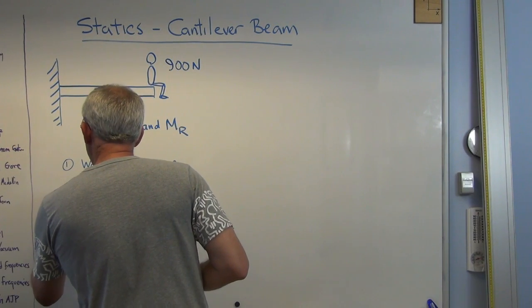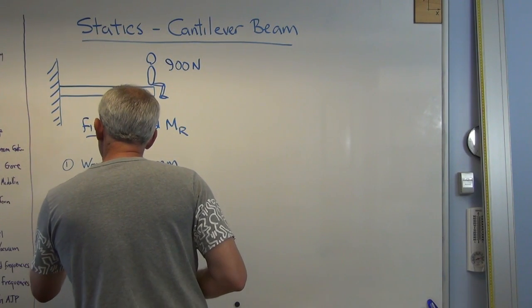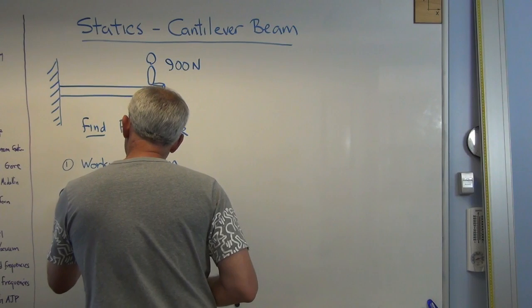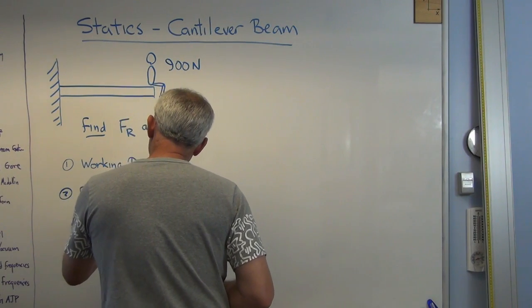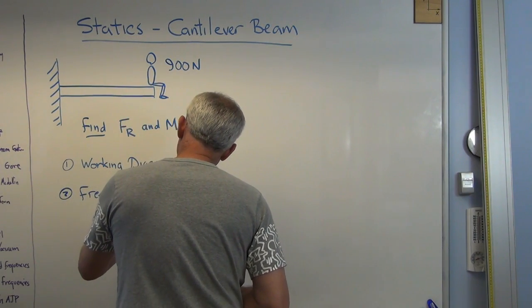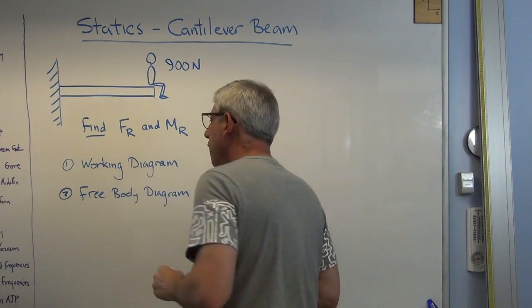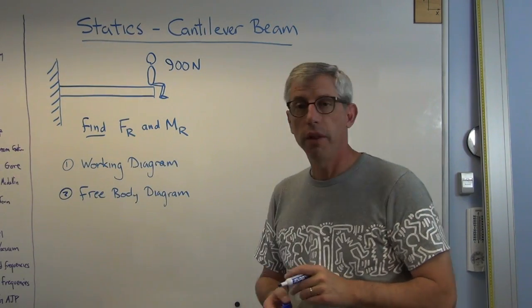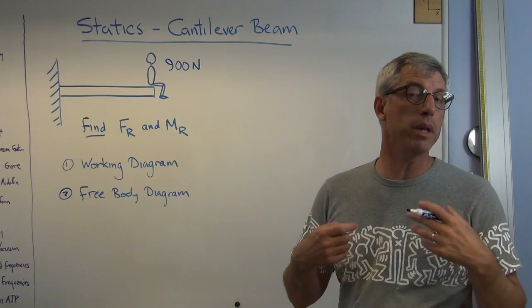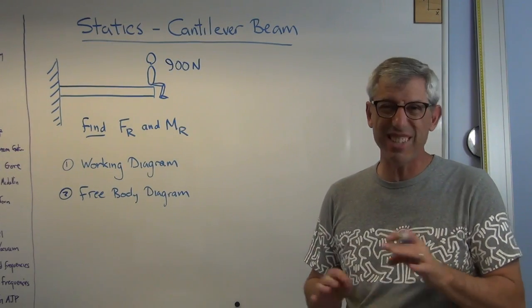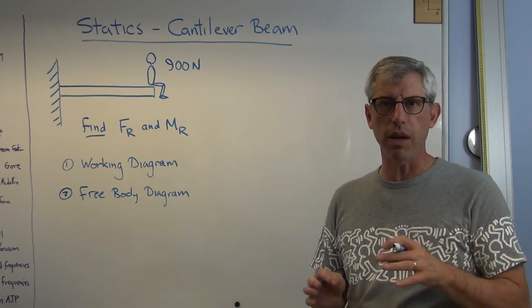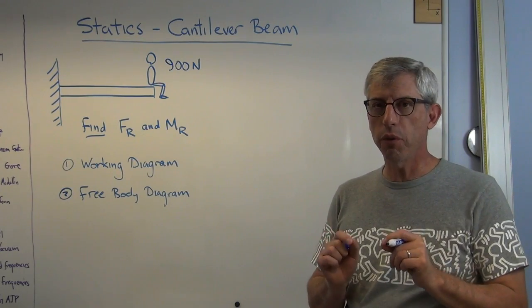Now, it doesn't necessarily have to have all the forces and moments in it. That's what comes next. The next step is a free body diagram. That's the diagram that really does show all the forces and moments. It doesn't have anything else on it. It doesn't have any complicating details. Only forces and moments.